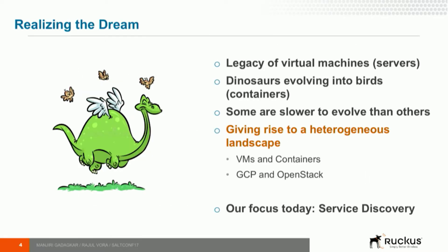Realizing the dream means managing risk. In most enterprises, you don't migrate all the services overnight from virtual machines to Kubernetes. What you do is migrate them one at a time in a slow and steady pace, so you end up in a hybrid situation where some services are in VMs and some are in Kubernetes. They still need to talk to each other, which means they still need to discover each other, and therefore service discovery becomes the main problem here.